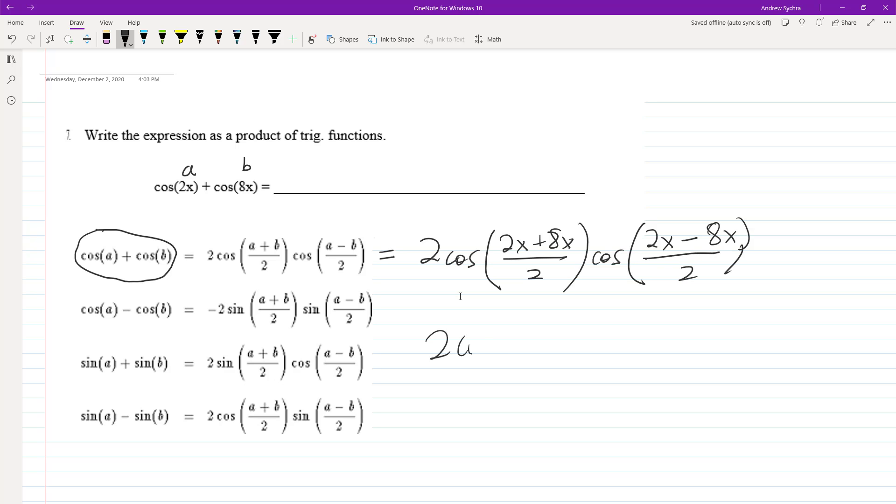So we get two cosine of 10 X divided by two, cosine of negative six X over two.